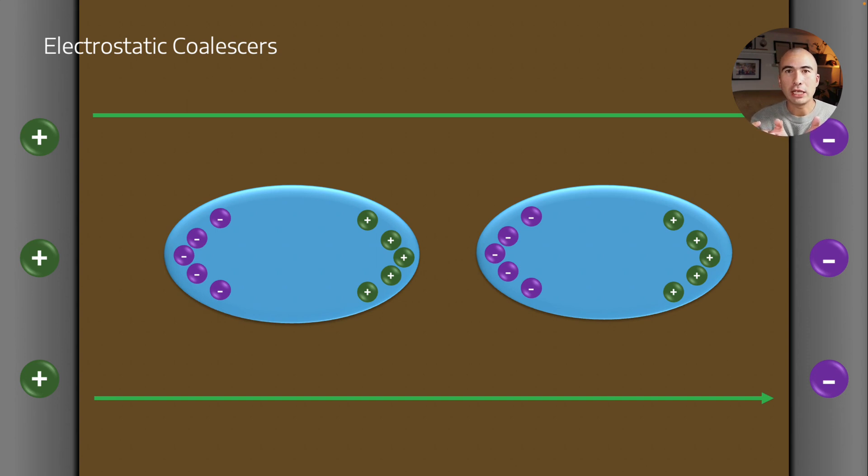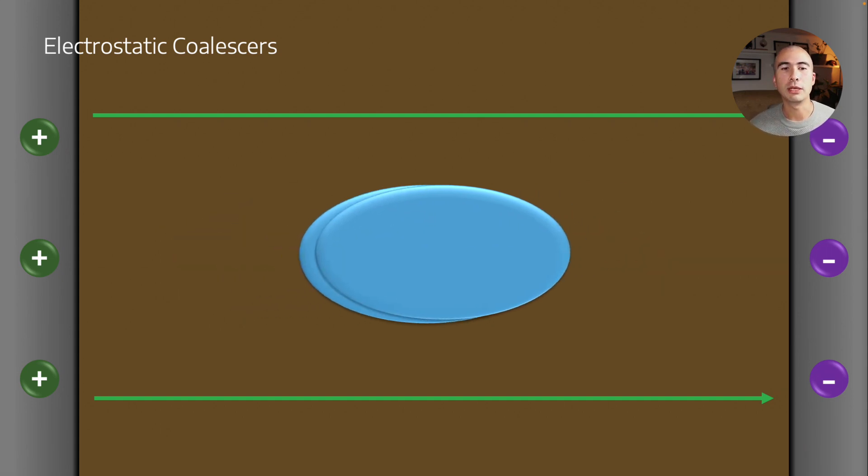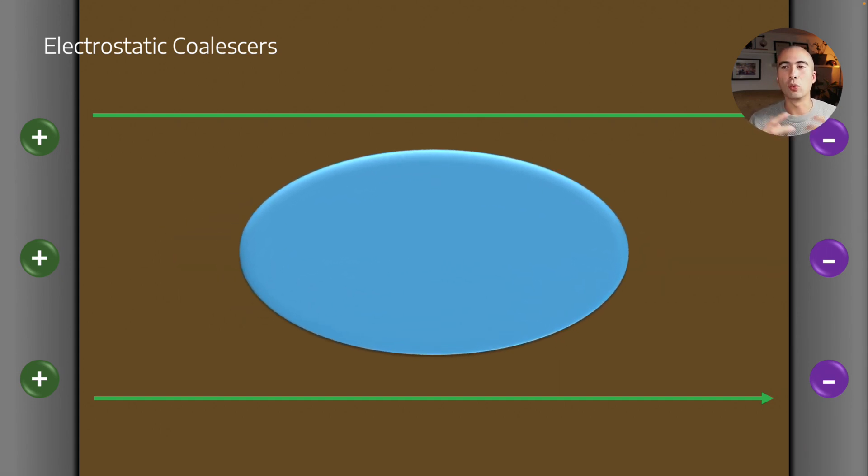Now all of a sudden, not only are they physically closer together, but now there are electric attractive forces between these. And this is going to cause these two droplets to be far more likely to coalesce into one larger droplet, and therefore, again, fall according to Stokes' law.